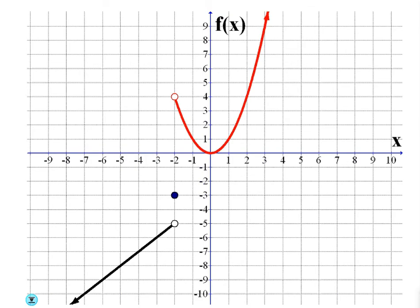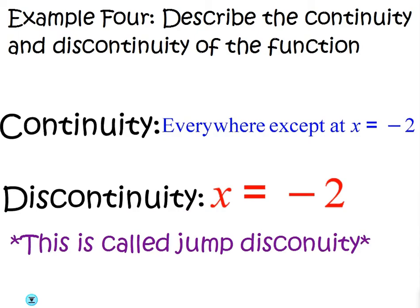Okay, the fourth type of discontinuity looks like this. If I try to go from this part of the graph to the next part, I have to do what? I have to jump up, right? There's a huge gap there. It jumps from negative 5 to 4. That's why we're going to call it jump discontinuity. Whenever the graph has a huge gap like that and it jumps, it has jump discontinuity.